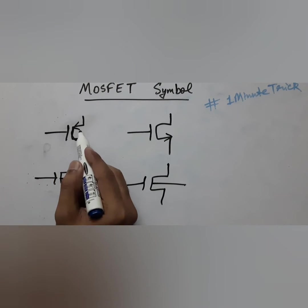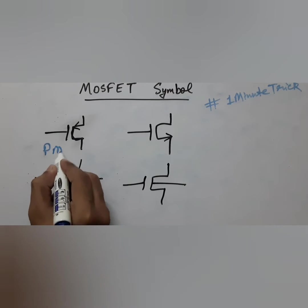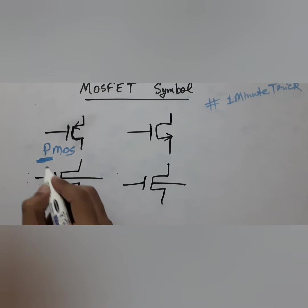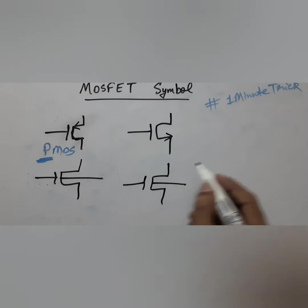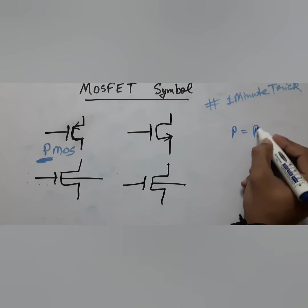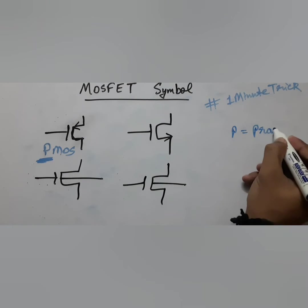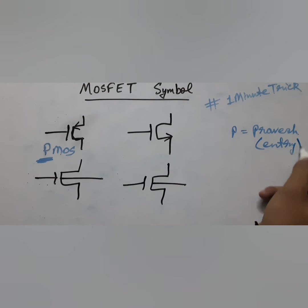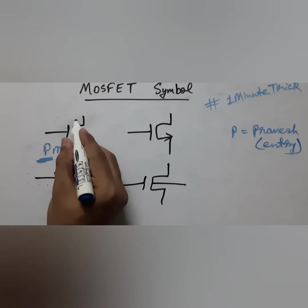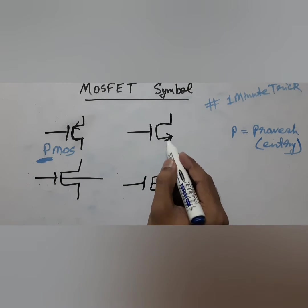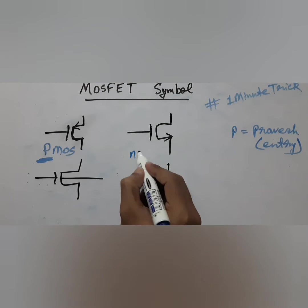In the first case, you can see the arrow is entering — it is PMOS. So what is the trick for P? P I have derived to be 'Pravesh.' Pravesh is in Hindi; it means 'entry' in English. So when the arrow is entering, it is Pravesh — PMOS.